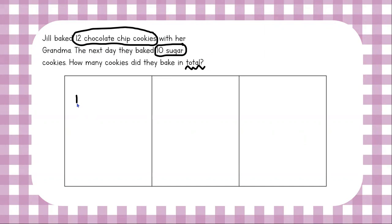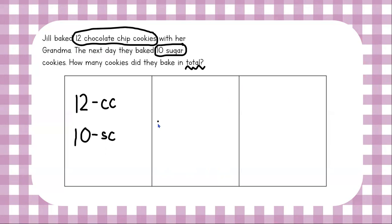Let's label our findings. Jill and grandma baked 12 cookies on the first day — CC for chocolate chip. On the next day they baked 10 SC for sugar cookies. They just want to know the total cookies. The keyword 'total' means we're going to use addition. So our number sentence will look like this: 12 plus 10 equals question mark. If you want to use counters and draw a picture, you can — that would be 12 circles plus 10 circles, then you count them.